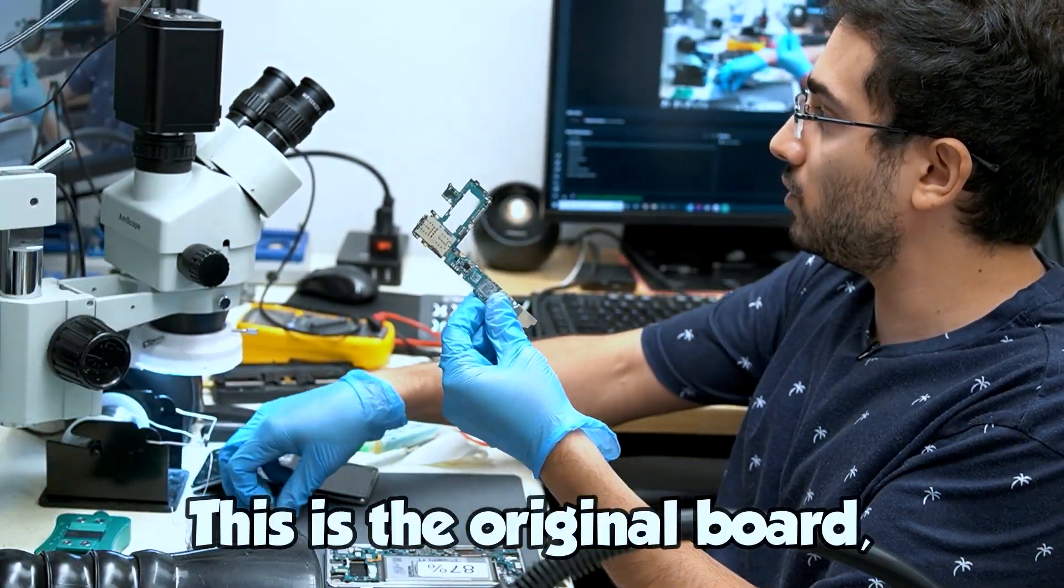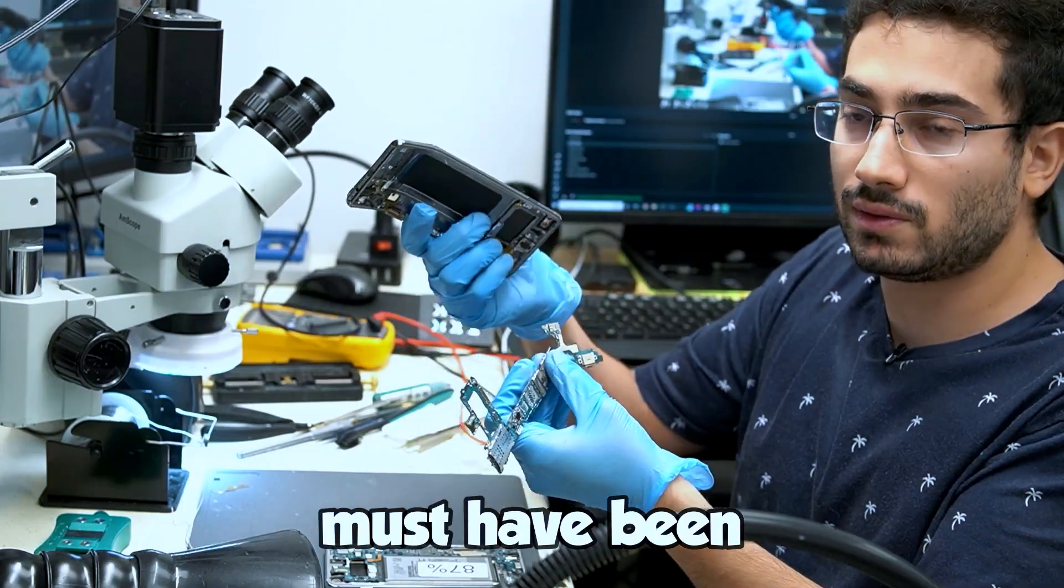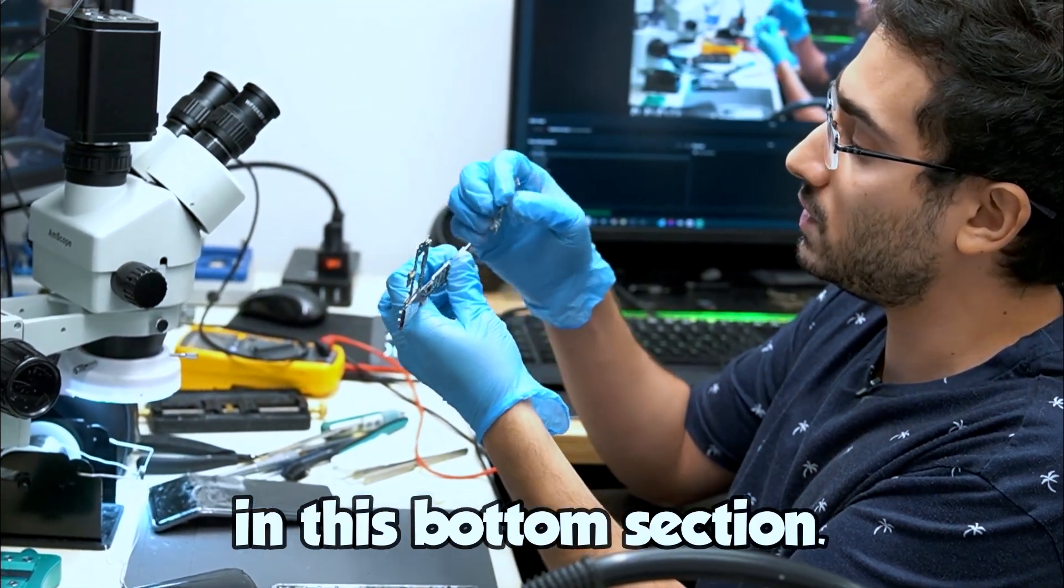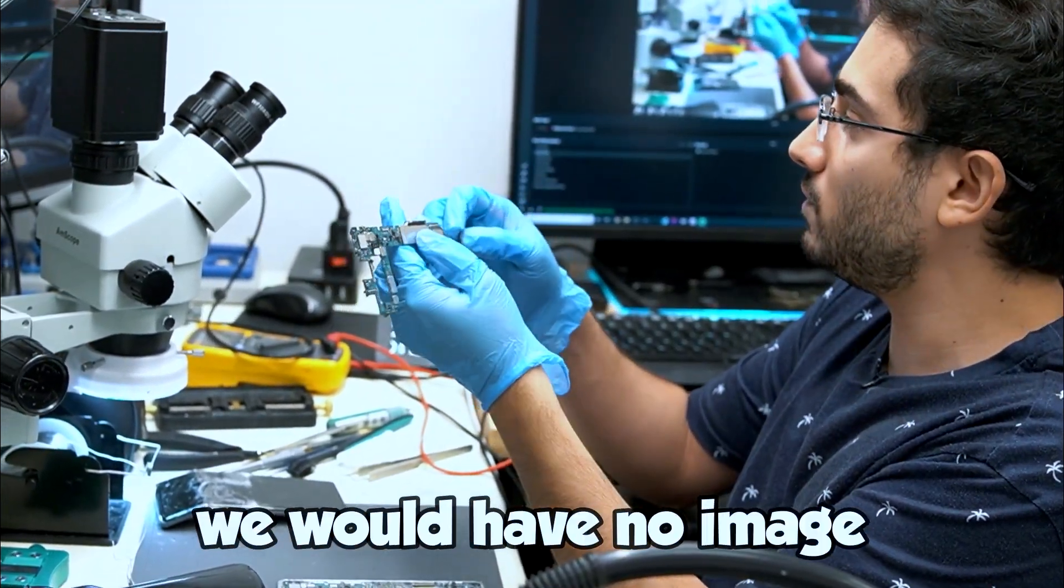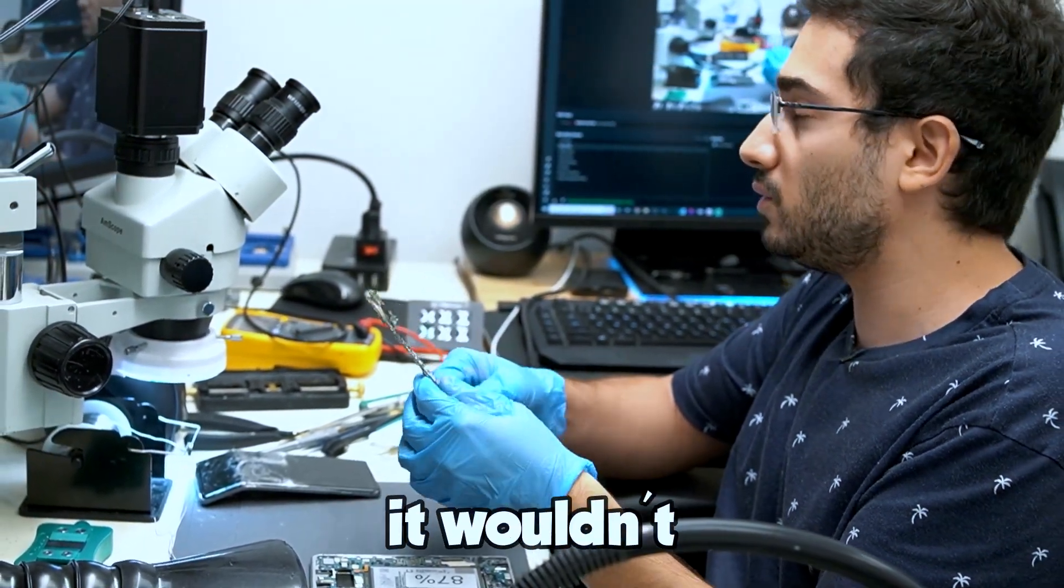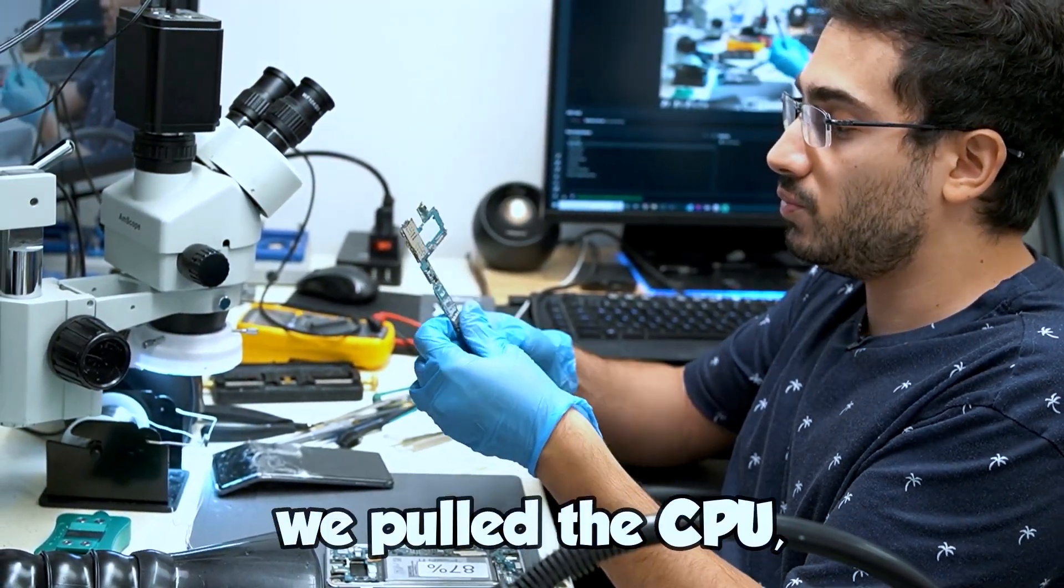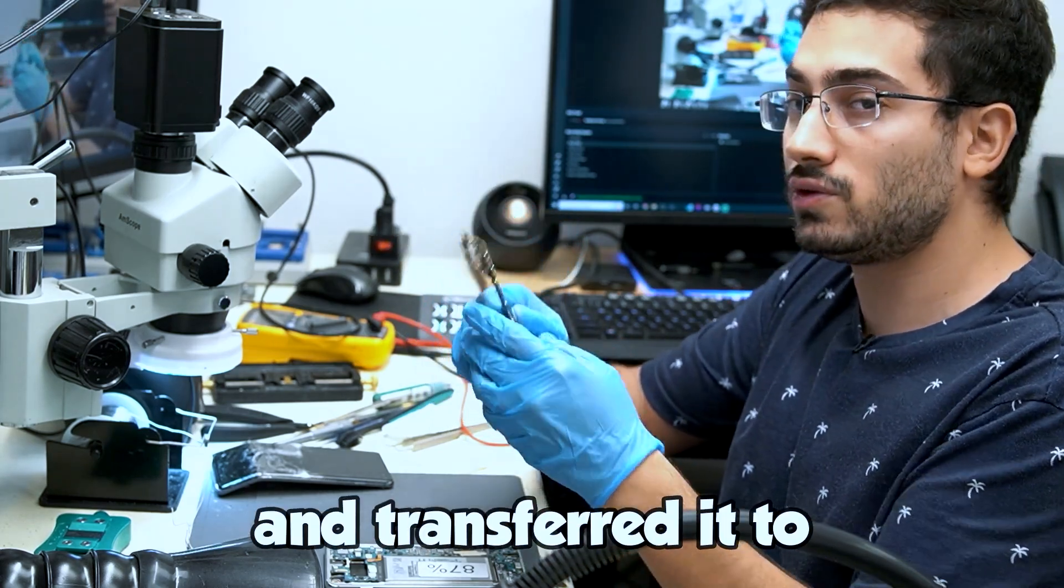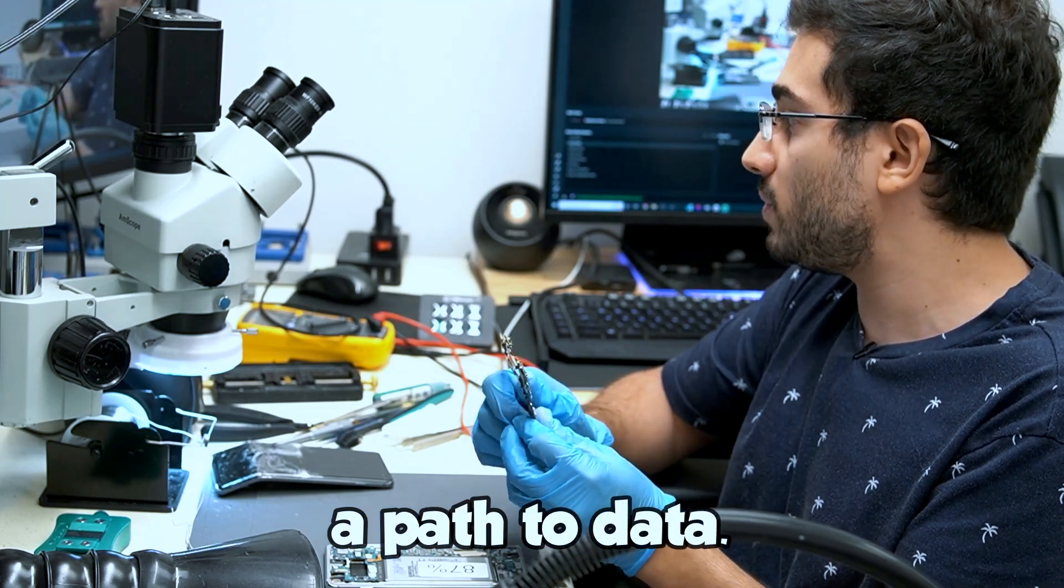This is the original board. Housing must have been run over. There are display IC components in this bottom section. Without that, we would have no image, even if it turned on. But according to the previous shop it was in at, it wouldn't even turn on at all. So we pulled the CPU, the RAM, and the UFS, and transferred it to a donor board. And that gave us a path to data.